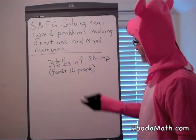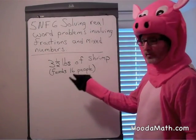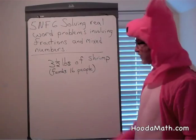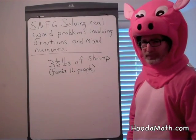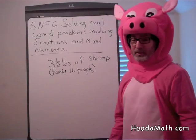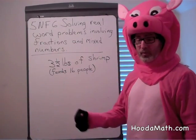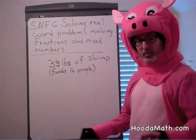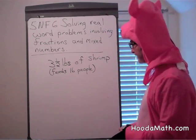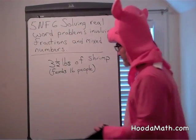Anyway, let's say in your paella you were going to use three and a half pounds of shrimp to feed 16 people. But something happened and some of your guests were ill, and only four of them were going to come. So you have to make a smaller paella. Four out of 16 would be one-fourth of the guests.